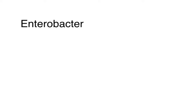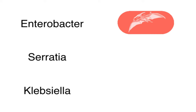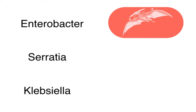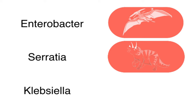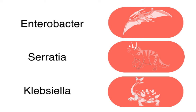The three we're going to cover are Enterobacter, Serratia, and Klebsiella, or as we at Sketchy Micro know them: Enterodactyl, Triceratia-tops, and finally this Ankylosaurus with a club tail, or Klebtail, which will be Klebsiella.